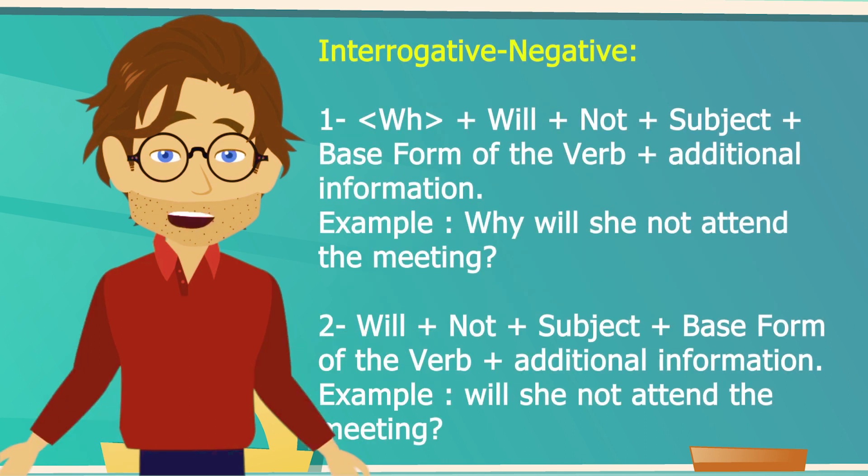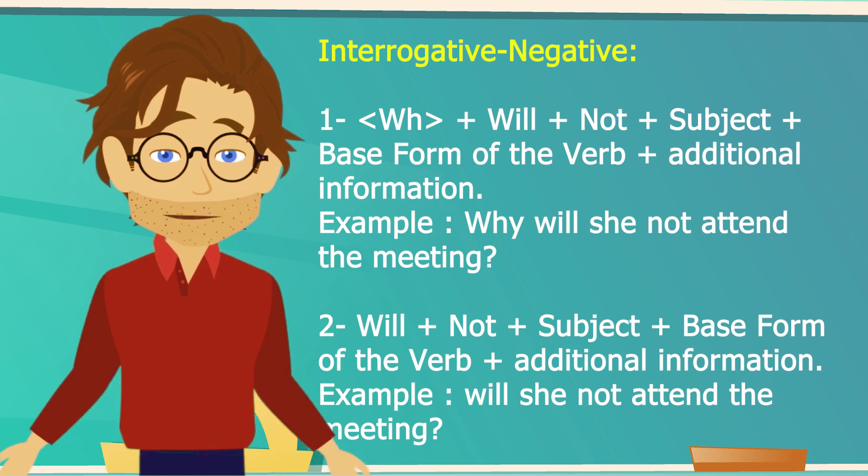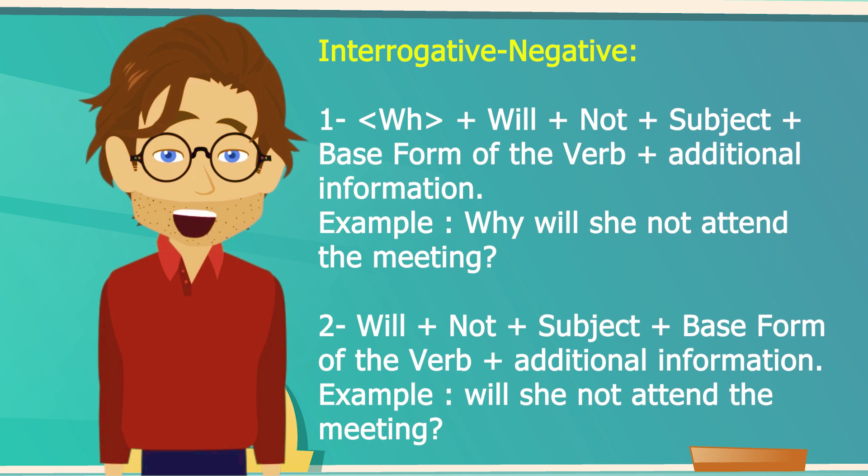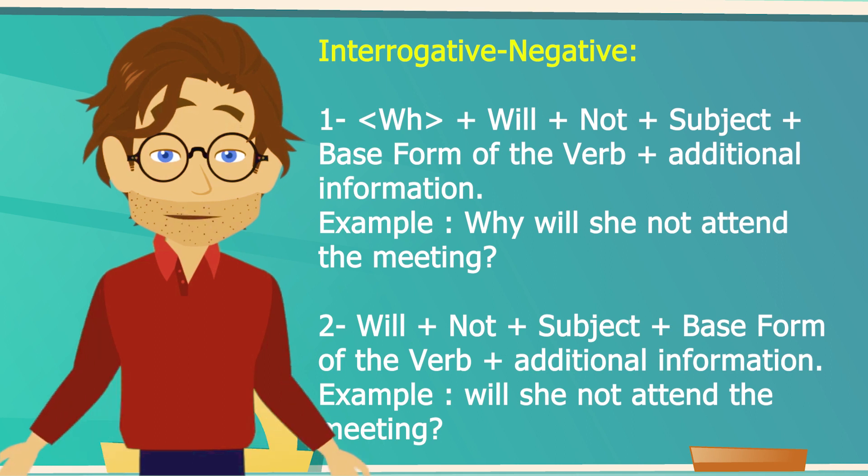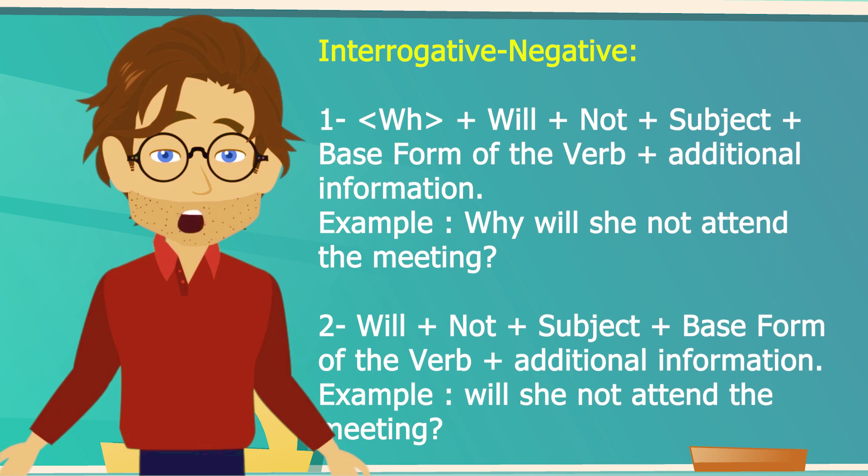Interrogative negative also has two forms. First one would start with WH words: WH word plus will plus not plus subject plus base form of the verb plus additional information. Example: Why will she not attend the meeting?